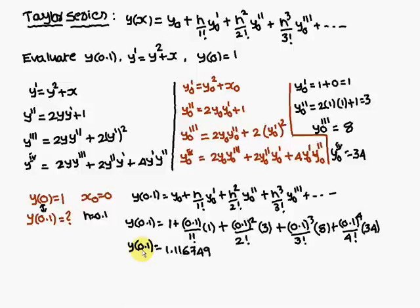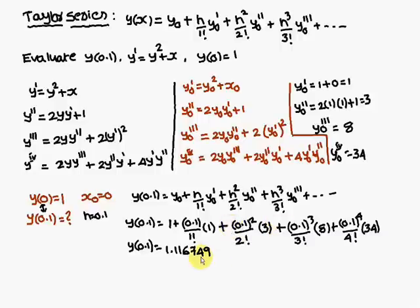So, y(0.1) ≈ 1.116749 is the answer. To summarize: using the Taylor series formula, we found the successive derivatives y₀', y₀'', y₀''', y₀'''', then substituted h = 0.1 and all the derivative values to compute the result. Thank you.